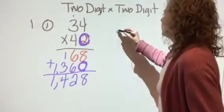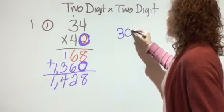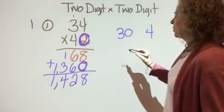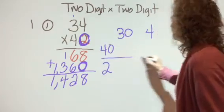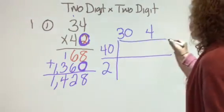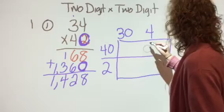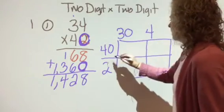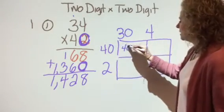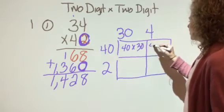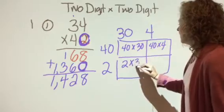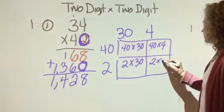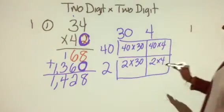Now, let me quick show you the area model for this. I'm going to take apart the 34 and the 42. Okay, so here it is. Do you see my problems? I've got 40 times 30 and 40 times 4 and 2 times 30 and 2 times 4. So let's quick do all this math.